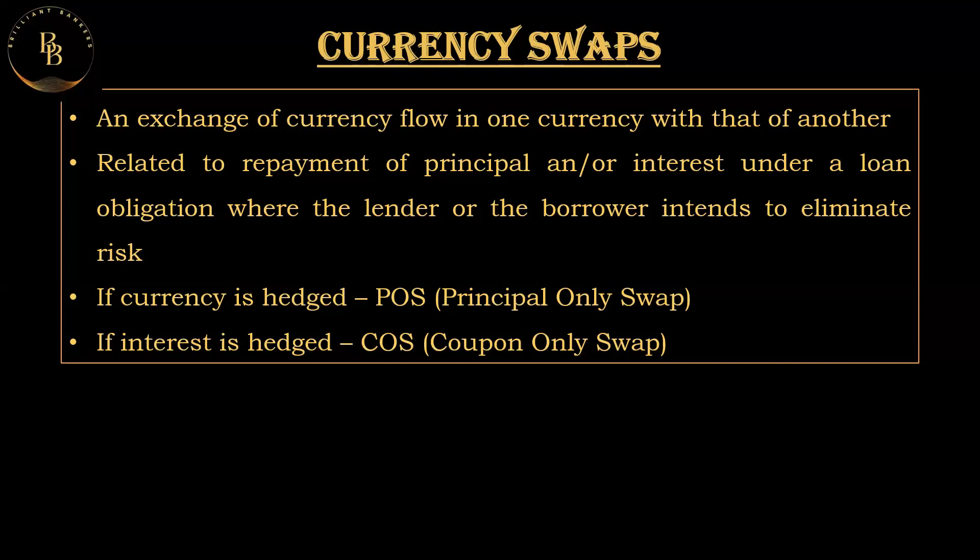In a principle-only swap, the Indian company pays the principal amount of the foreign company's loan in INR, and the foreign company pays the principal of the Indian company's loan in their local currency. This allows both companies to manage exposure to changes in principal amounts without affecting interest payments. In a coupon-only swap, both companies agree to exchange only the interest payments — the Indian company pays the interest of the foreign company's loan in INR, and the foreign company pays the interest of the Indian company's loan in local currency.